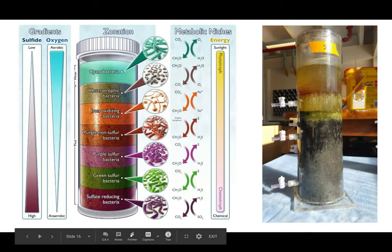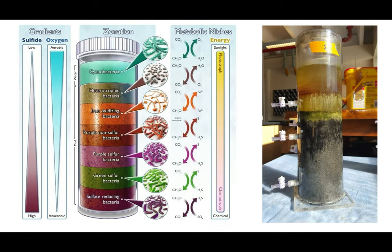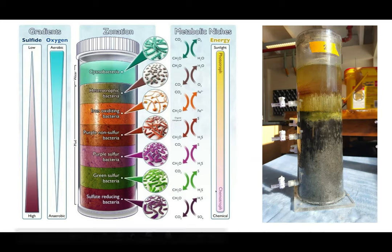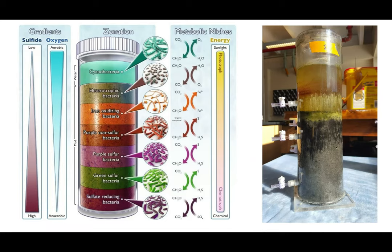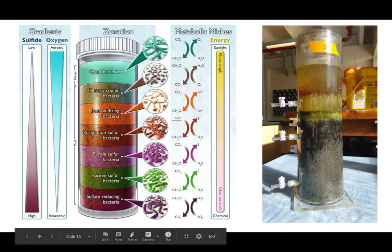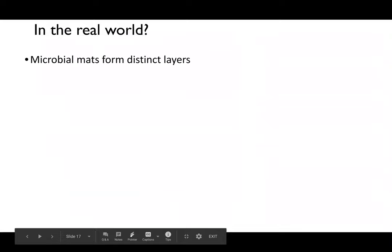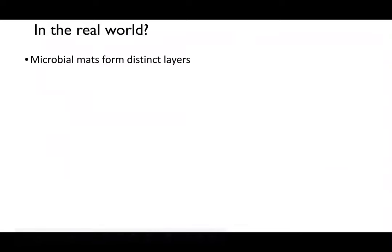If you want to see what a real Winogradsky column looks like in the laboratory, you can physically see the layers: the water column where cyanobacteria live, the heterotrophic bacteria, the iron-oxidizing bacteria, then the sulfur bacteria, and then the black layer at the bottom where sulfate-reducing bacteria are. The black color occurs because hydrogen sulfide reacts with iron to produce pyrite — fool's gold — which is why it appears black.